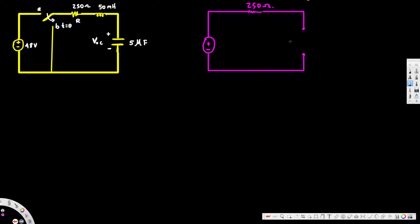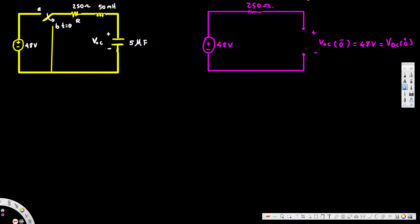We are interested in the voltage across the capacitor, Voc. Initially, the voltage across the capacitor is going to be the same as the source voltage, so Voc(0−) is equal to 48 volts. After we flip the switch, the voltage across the capacitor doesn't change immediately, so Voc(0+) is still going to be 48 volts.